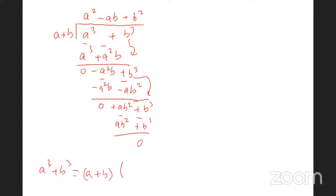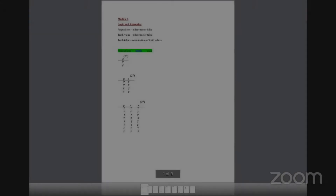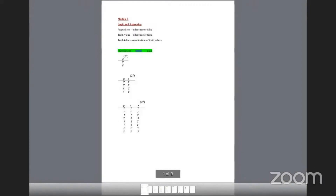So a cubed plus b cubed equals (a plus b)(a squared minus ab plus b squared). You can learn this expansion — you don't have to do long division every time. Notice what is different: the sign in front of the ab term changes.